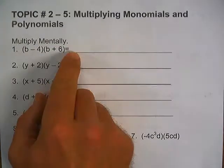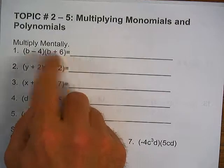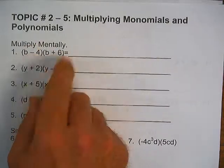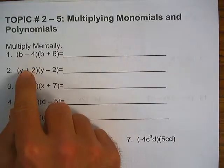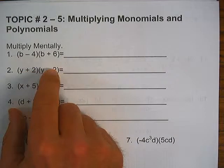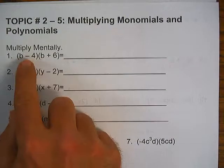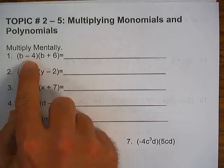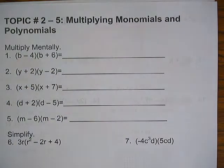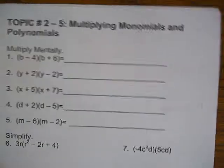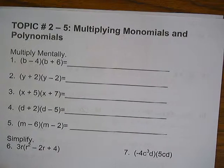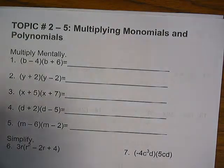These are all multiplying binomials together. On the first one, let's use FOIL.